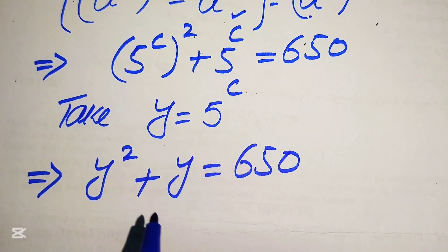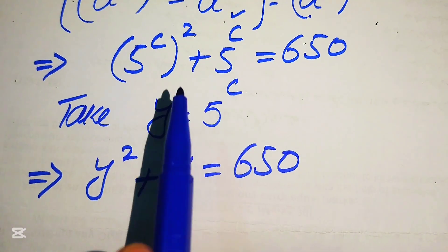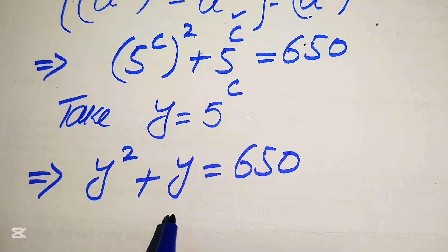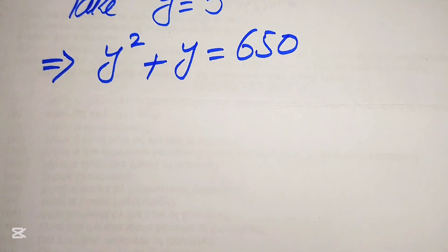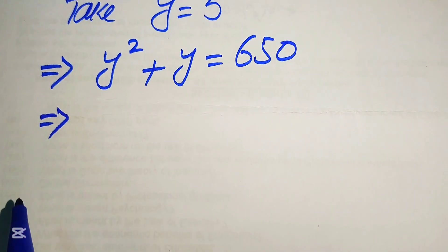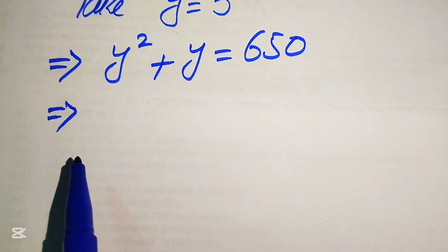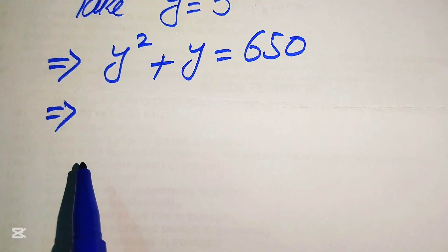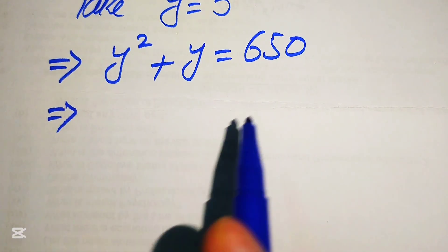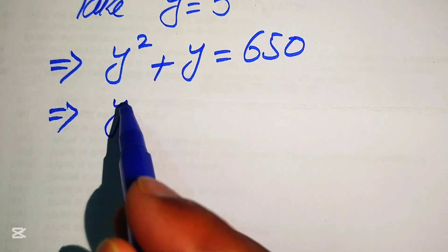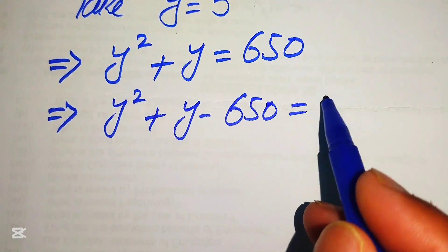After substituting y equals 5 to the power of C, our exponential equation becomes a quadratic. We have three methods to solve it: factorization, completing the square, or the quadratic formula. Moving 650 to the left gives us y squared plus y minus 650 equals 0.